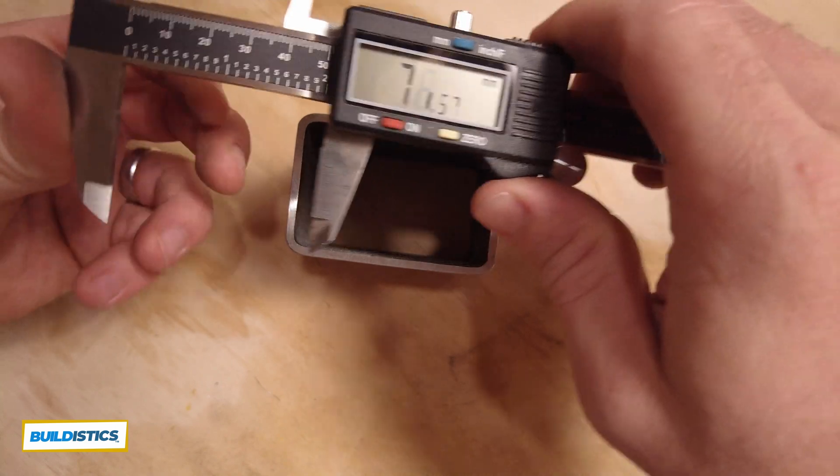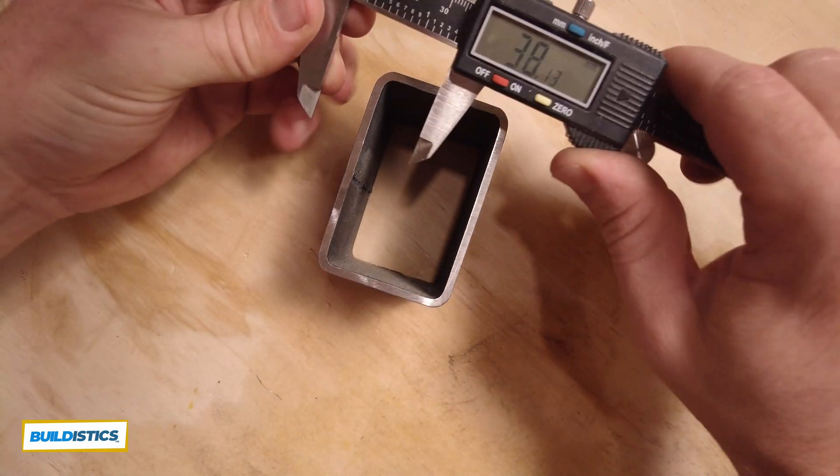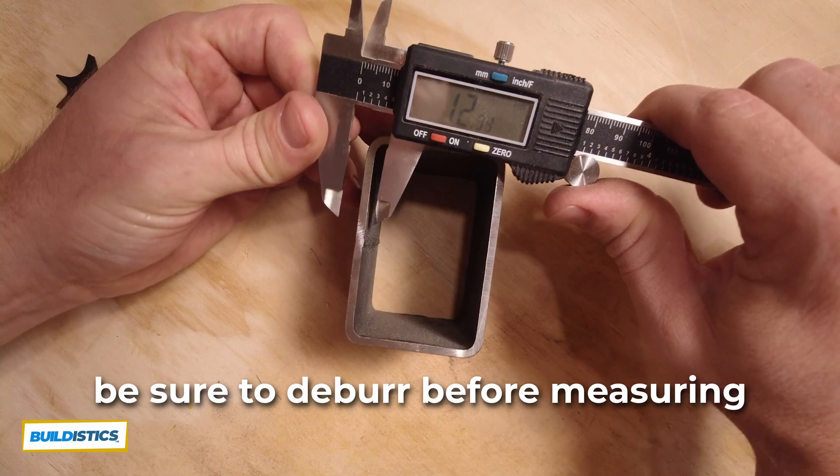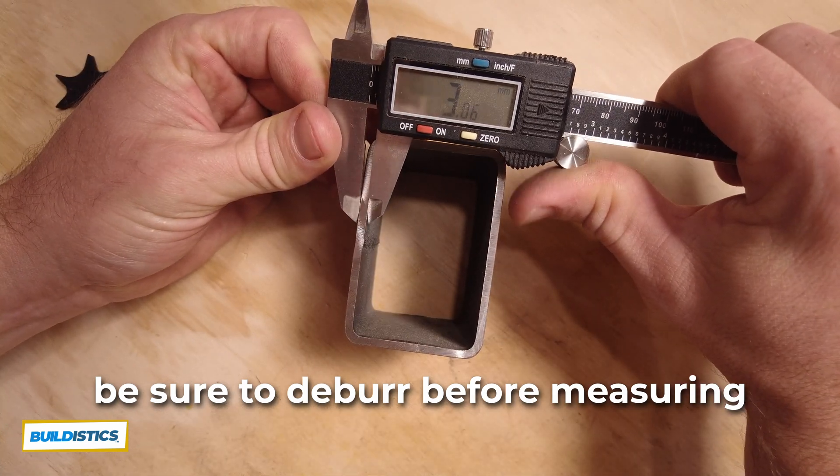And then you take that as well as your steel thickness, just measure that, three millimeters.